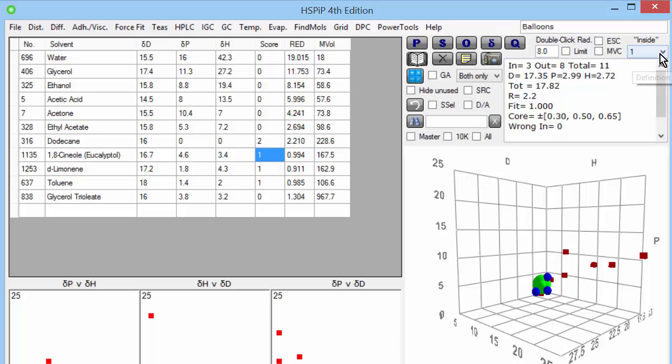But if I say that twos are also acceptable and refit, then I get a different sphere. Clearly it's bigger because I've relaxed the criteria. I'm accepting not very good solvents. And the result hasn't changed too much. The DH has gone down a bit. So we now know that the HSP of polyisoprene is somewhere between the really good results and the not so good results.